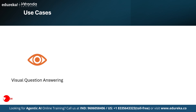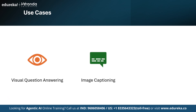BLIP-2's use cases include: visual question answering — for example, 'what's in this picture?'; image captioning — for example, 'a man riding a horse on a beach'; and chatbots with vision, where you upload an image and ask questions.